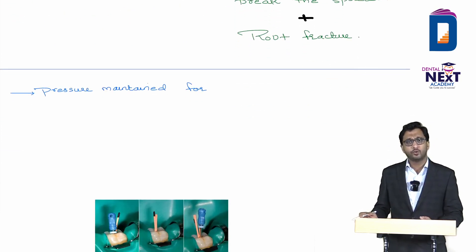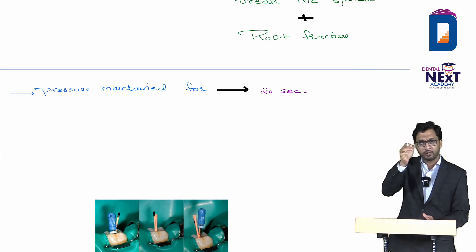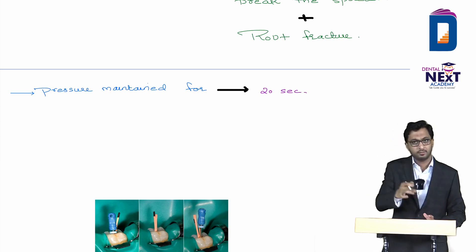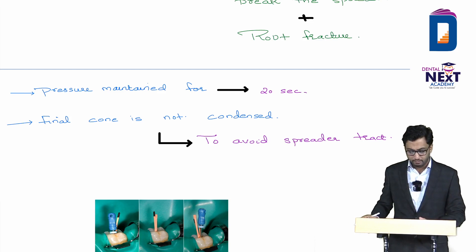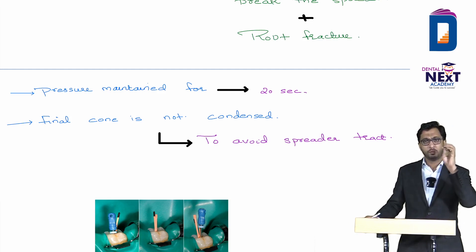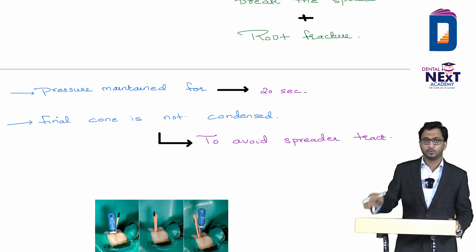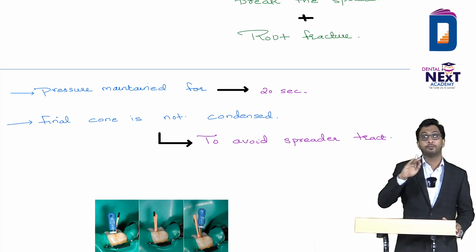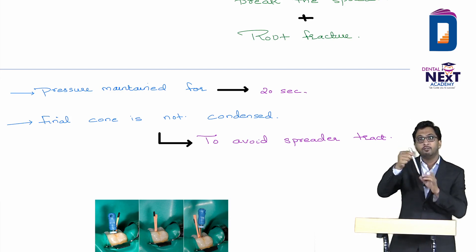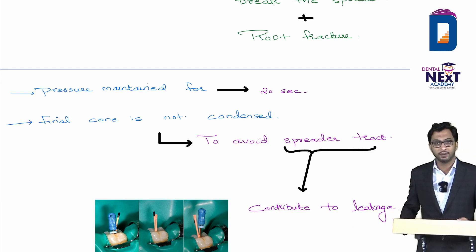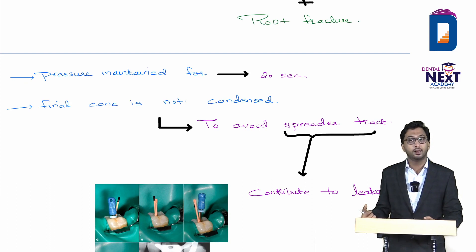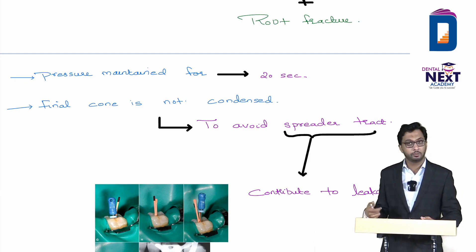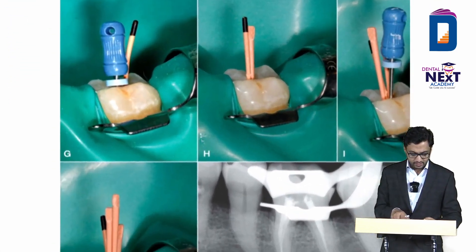Pressure is maintained for 20 seconds during lateral condensation. Importantly, the final accessory cone is not condensed. If you condense after the last cone, you leave a spreader tract which can contribute to leakage. So after the last cone is placed, do not condense it — this is to avoid micro-leakage and spreader tract formation.